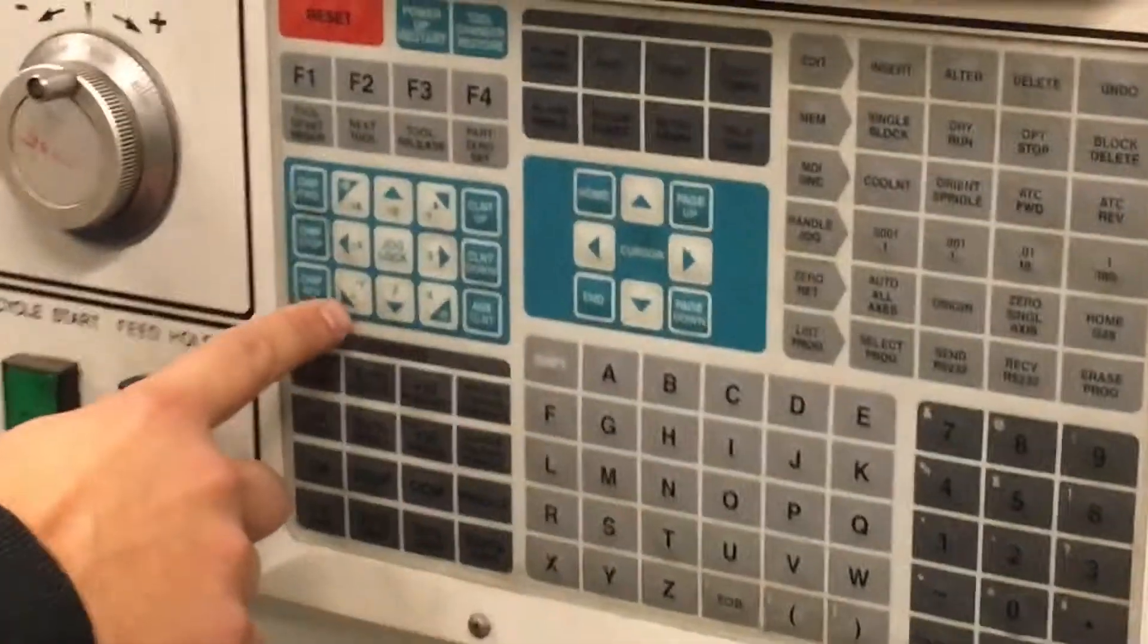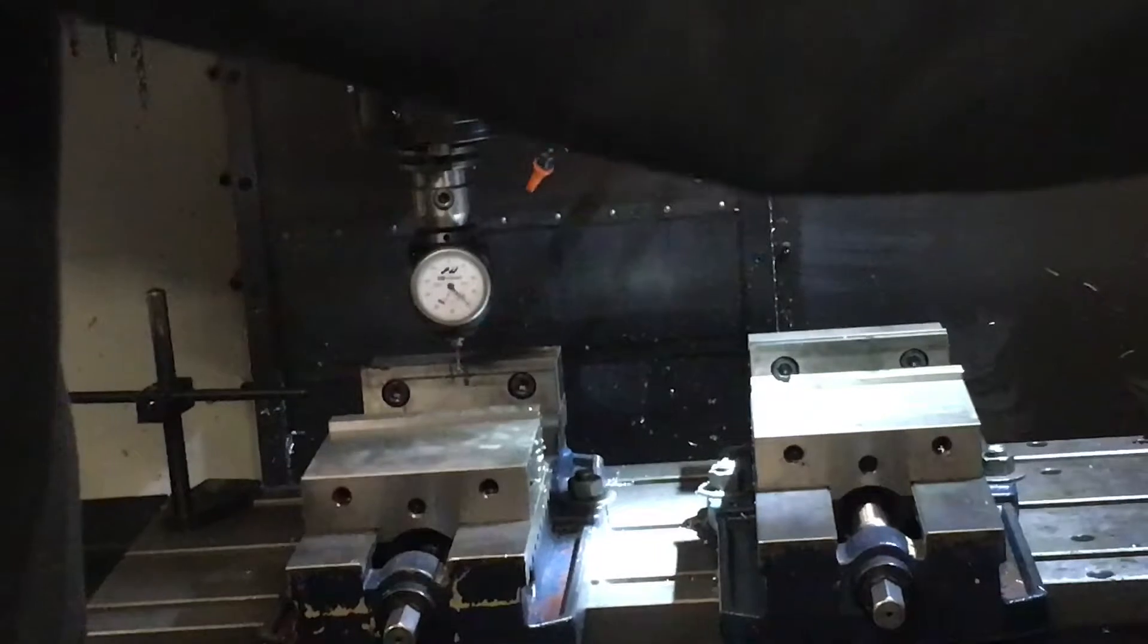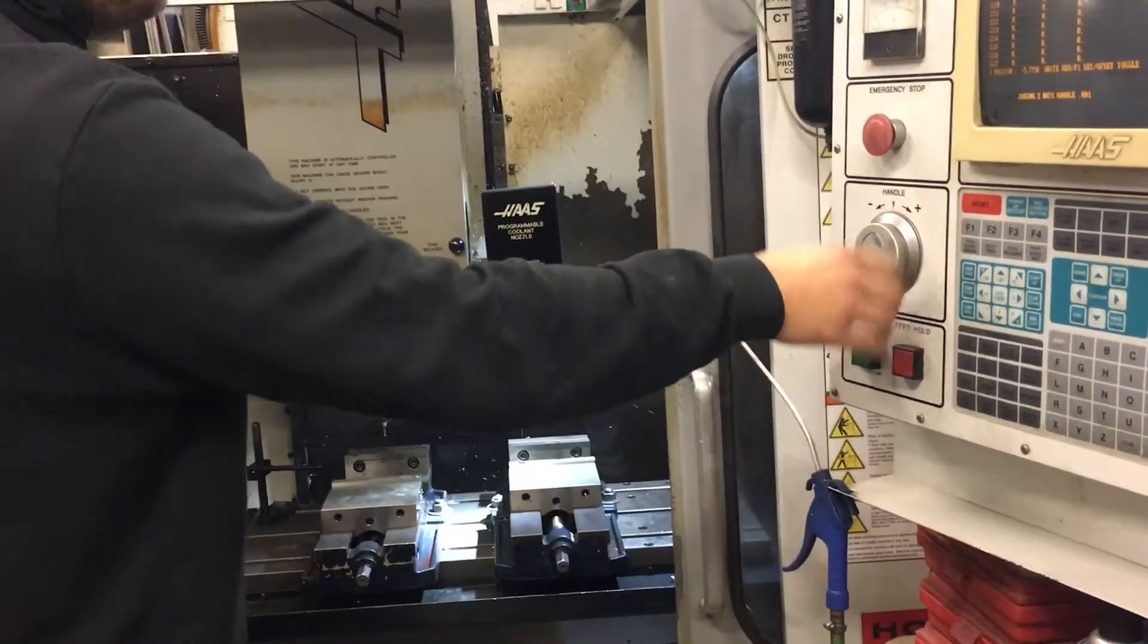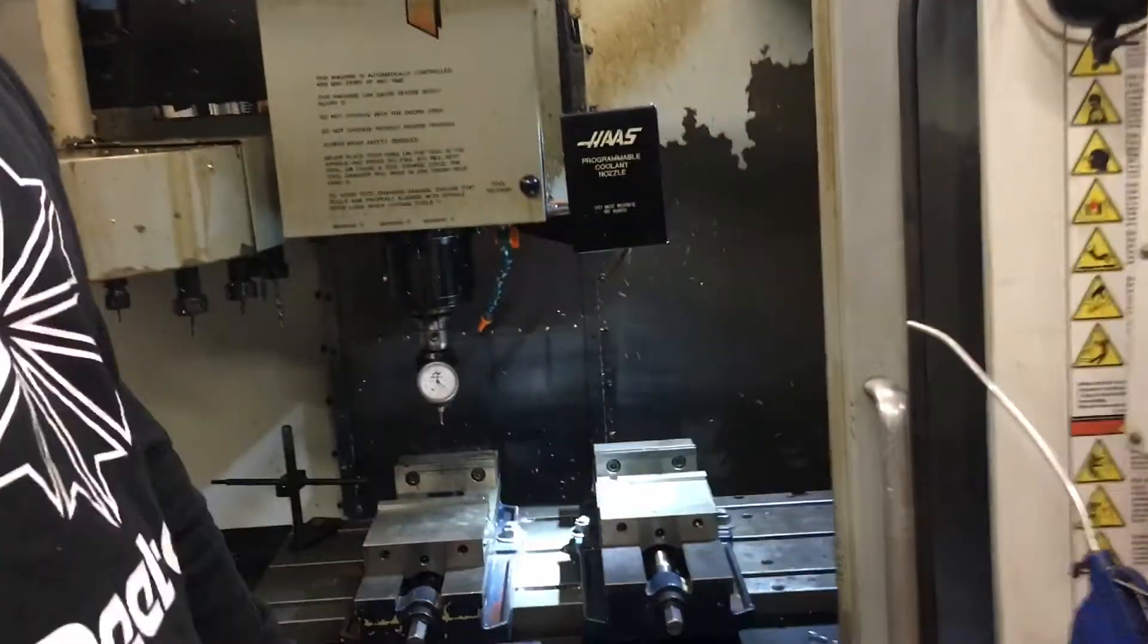So you go in your handle jog, go in your lowest increment, and you go in your Y. And we're going to just back out of this. And then you can go Z and we're going to go up. It's very important that you don't put too much stress on that because that's a set tip and it'll end up breaking it off.